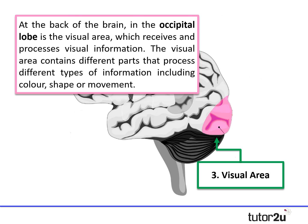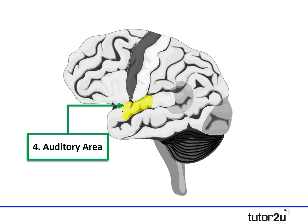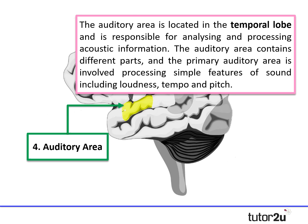The visual area is located at the back of the brain in the occipital lobe and receives and processes visual information, including different parts that process colour, shape, and movement. The auditory area is located in the temporal lobe and is responsible for analysing and processing acoustic information. The primary auditory area specifically is involved in processing simple features of sound, including how loud something is, the tempo, and the pitch.